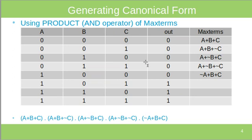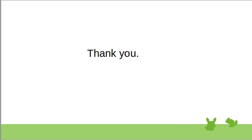I think we all now understand canonical forms. You can try deriving more canonical forms from truth tables, and if you have any questions, let me know in the comment section. Thank you.